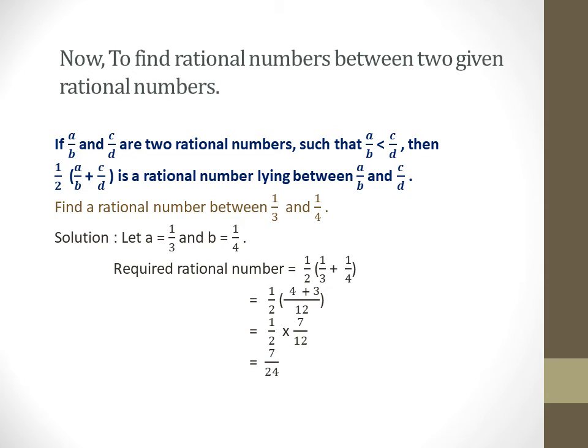If we take an example, find a rational number lying between 1/3 and 1/4. Here, we assume that let a = 1/3 and b = 1/4. Now, putting these values a and b in the formula, we get 1/2(1/3 + 1/4). First, we solve this bracket by taking the LCM which is 12, and we get (4+3)/12. Now, 1/2 × 7/12 = 7/24.